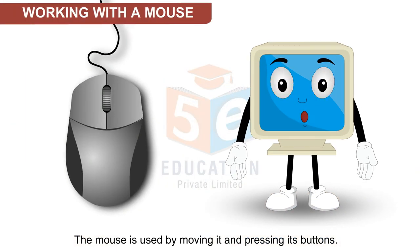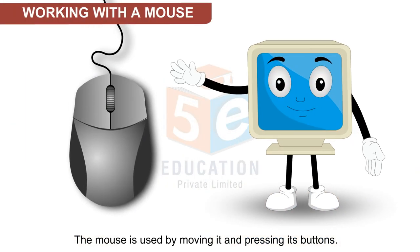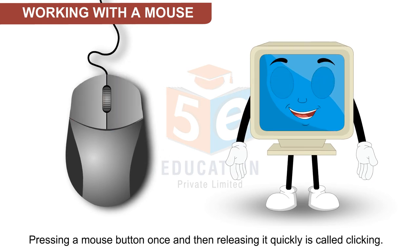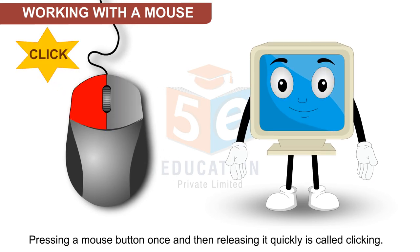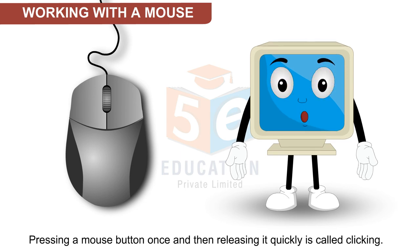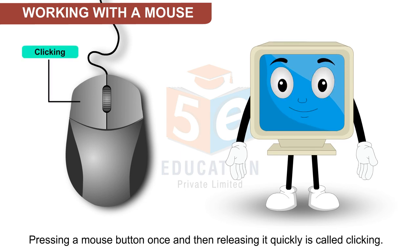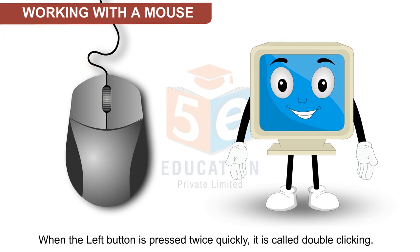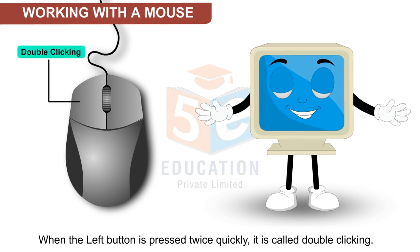The mouse is used by moving it and pressing its buttons. Pressing a mouse button once and then releasing it quickly is called clicking. When the left button is pressed twice quickly, it is called double clicking.